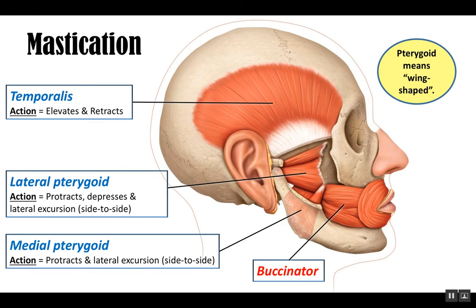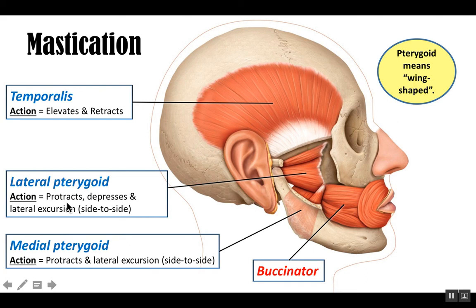Here's a deeper view of the muscles of mastication as well as the buccinator. We've removed a lot of muscles of the face primarily so we could see the pterygoid muscles. The word pterygoid actually means wing-shaped, and you can really see why when you look at the lateral pterygoid — it looks much like a wing. The lateral pterygoid helps depress the mandible a little when you open your mouth, and both pterygoids help with lateral excursion, which is side-to-side movement. These muscles are really useful when you're grinding food because they perform the protraction and side-to-side motion.